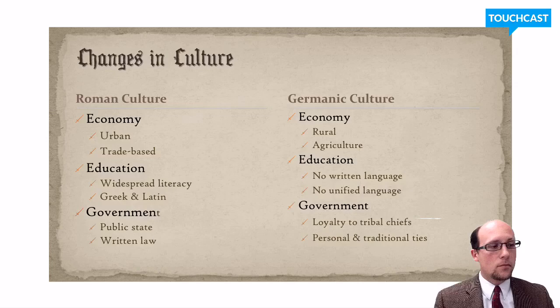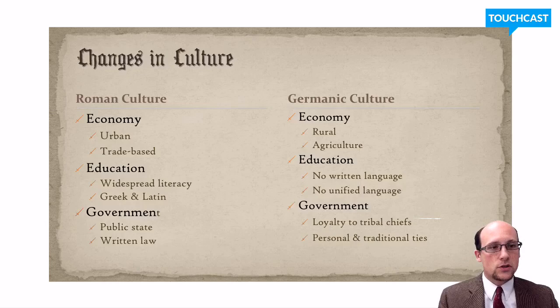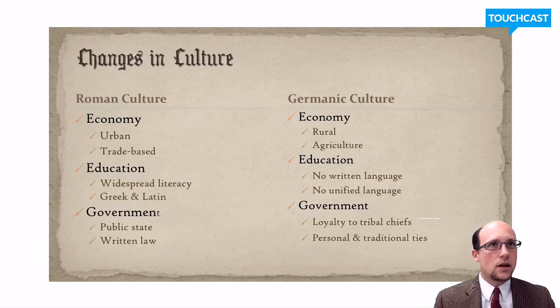In terms of government, Rome was a public state. Everybody in the Roman Empire was either a citizen or subject to a written code of laws. If somebody robbed you, you'd get the police, take them to court, and there'd be a trial with evidence and a judge's sentence. Germanic culture was much different — people weren't loyal to a state; they were loyal to their tribal chiefs and families. The ties were very personal and traditional. Disputes might be settled by elders, or even by a trial by fire, where whoever didn't get burned was deemed protected by God. It was a much more religious and much less legal system, with no single unified state.